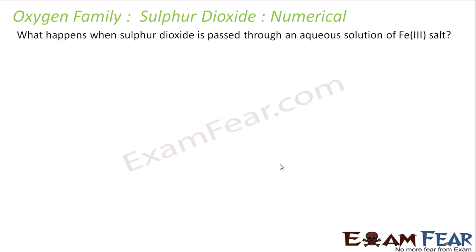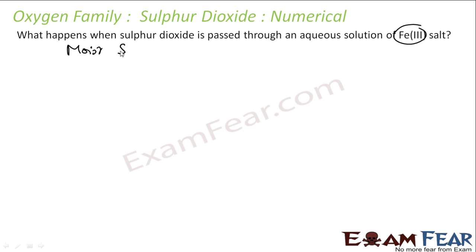Let's take a numerical on Sulphur Dioxide: what happens when Sulphur Dioxide is passed through an aqueous solution of bleaching salt? We have seen that moist Sulphur Dioxide acts as a reducing agent — only the moist form is the reducing agent.